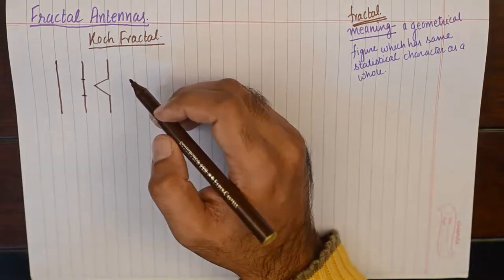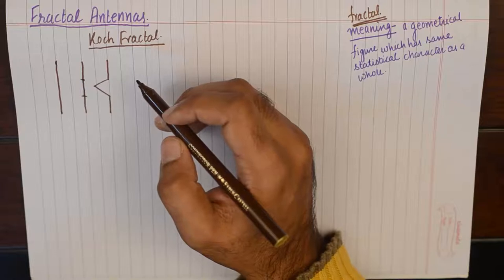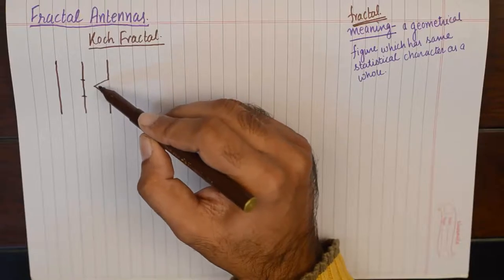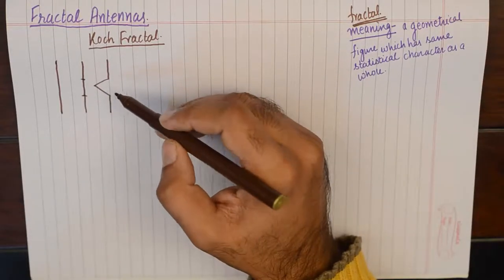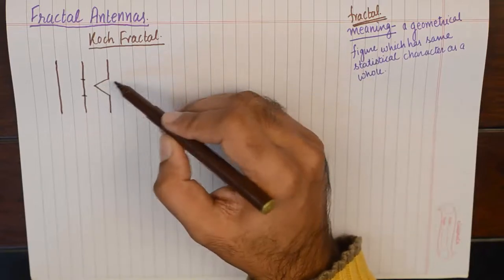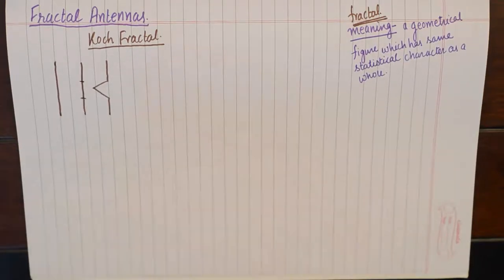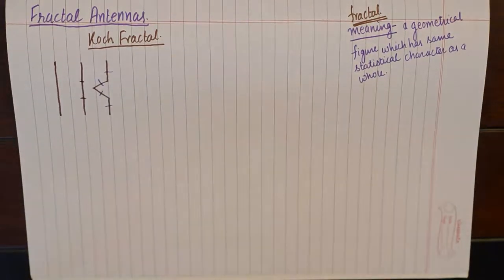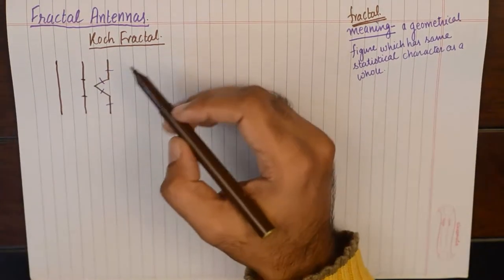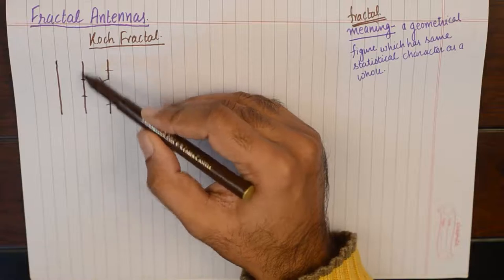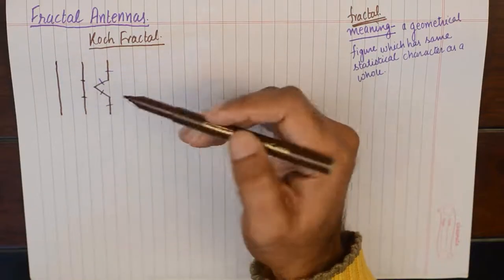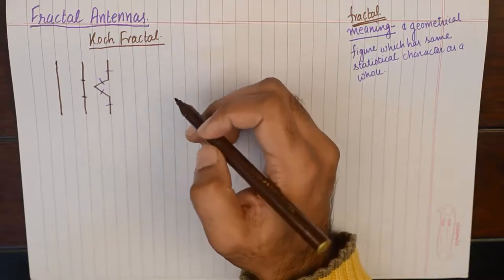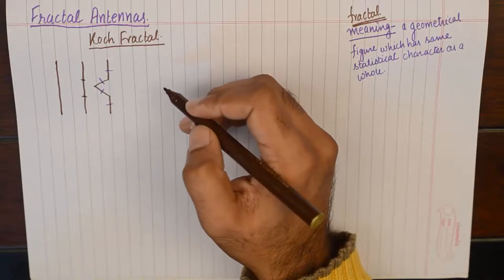For example, if I take another iteration of this modification, I will take up all the straight lines that I have — I now have four straight lines. I will do the same thing with these straight lines as I did with the main big straight line: divide each into three parts, take the middle third, and put in a bent wire section in each of them.